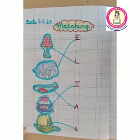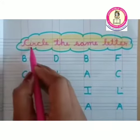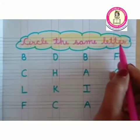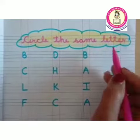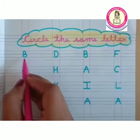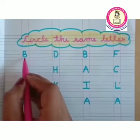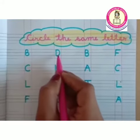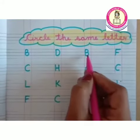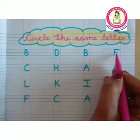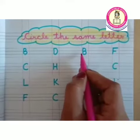Next topic is: Circle the same letter. Which letter is the same? B, D, B, F. The answer is letter B.